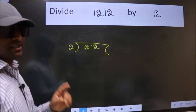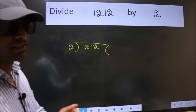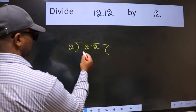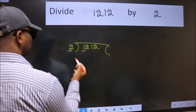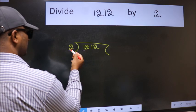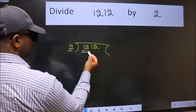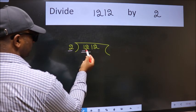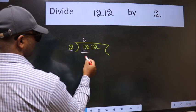This is your step 1. Next, here we have 1 and here 2. 1 is smaller than 2, so we should take 2 numbers: 12. When do we get 12 in the 2 table? 2 times 6 is 12.